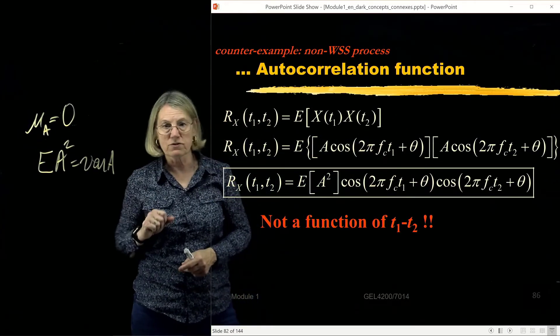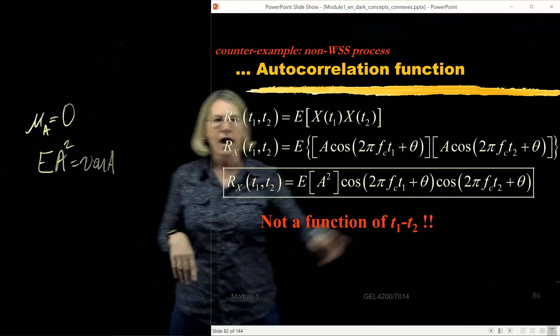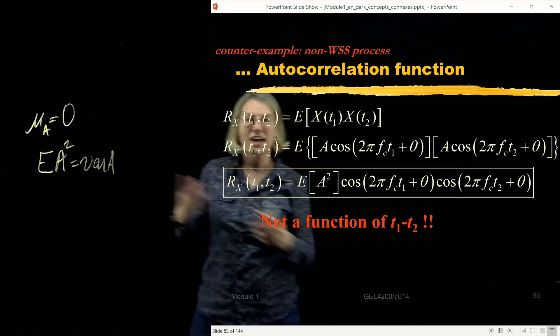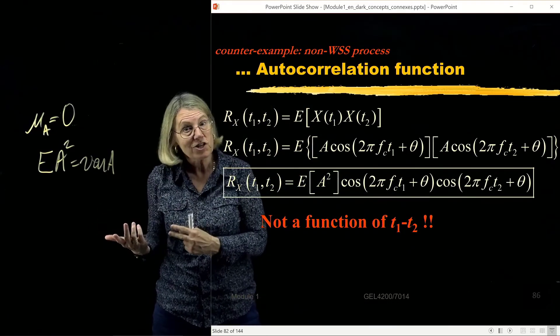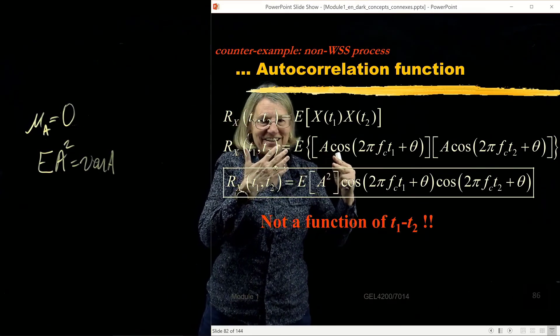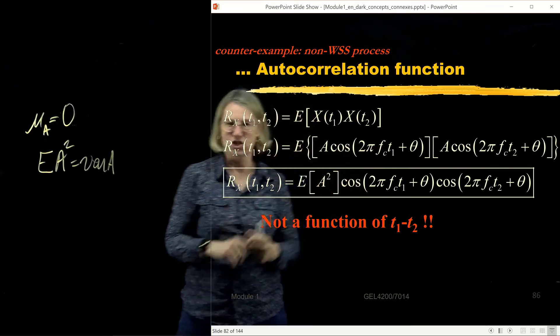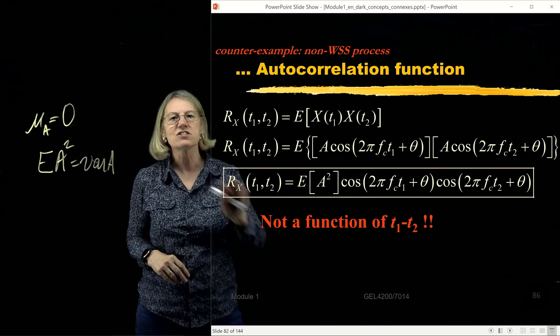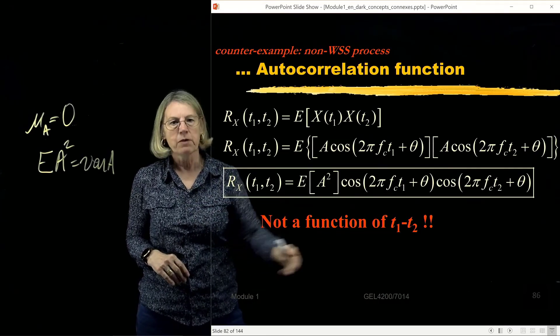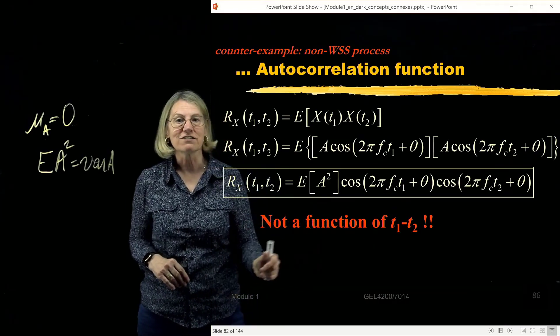Even if I used one of those trigonometric functions, I would get one which was the difference, t1 minus t2. But I'd also get a term which was the function of cosine of t1 plus t2. And so this one is just not wide-sense stationary because it's not a function only of the difference.